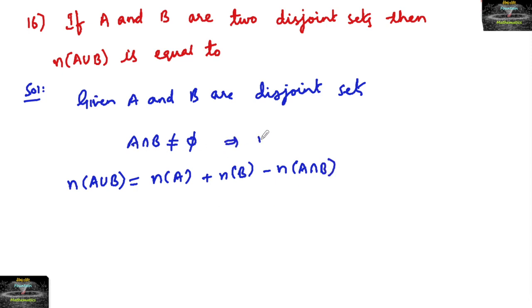If A intersection B is empty, then n(A∩B) cannot be equal to 0. It's non-zero. But in the case of joint sets, we can write n(A∩B) is equal to 0. And hence the formula becomes n(A∪B) is equal to n(A) plus n(B).